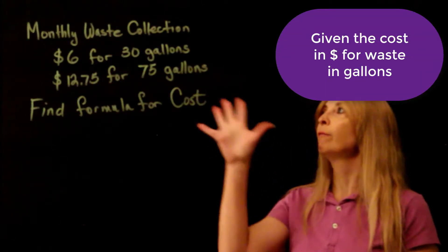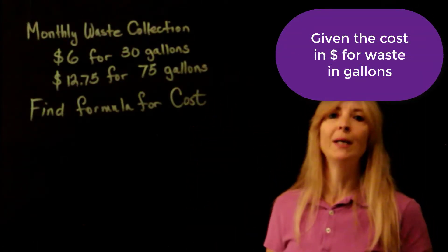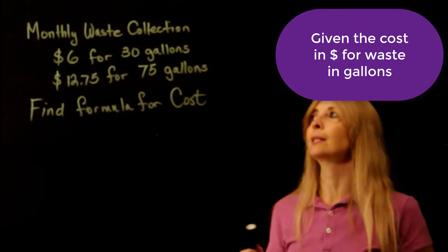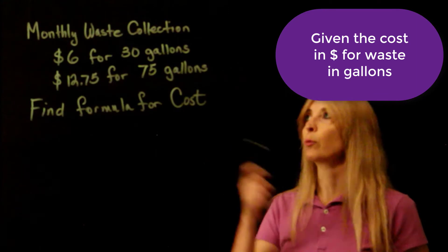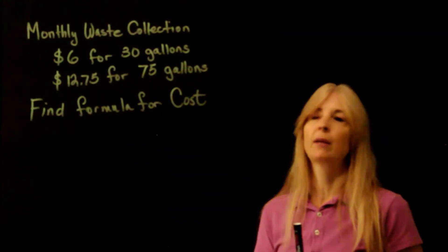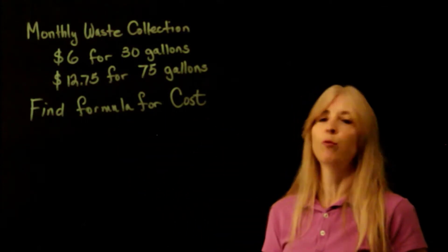Okay, let's say we're given information about monthly waste collection, and they're telling us it costs $6 to get rid of 30 gallons of waste, $12.75 for 75 gallons of waste, and we want to find a formula for cost.